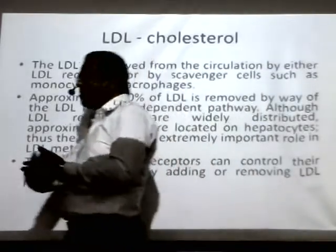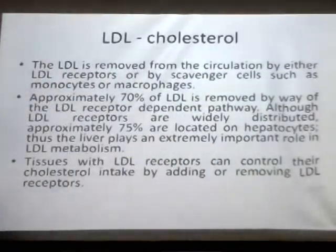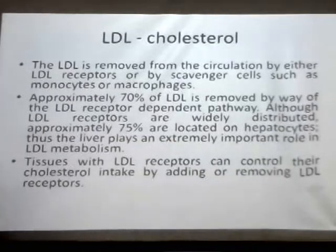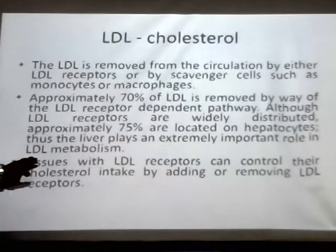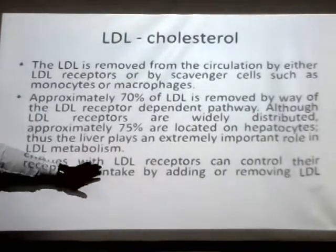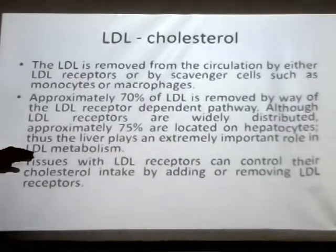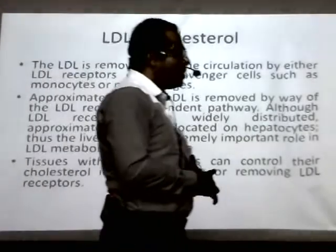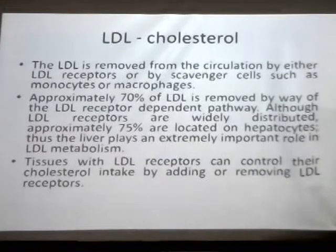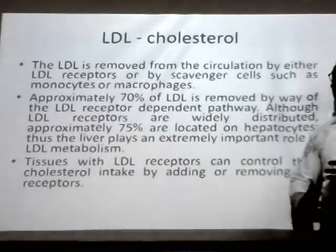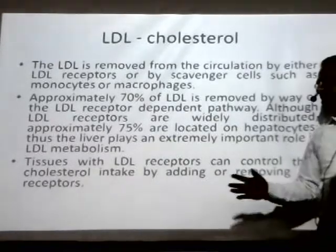Usually LDL is removed from the circulation by either LDL receptors or scavenger cells such as monocytes or macrophages. If there is an excessive amount of LDL in the blood circulation, they would be removed either by macrophages or monocytes. Approximately 70% of LDL is removed by the LDL receptor-dependent pathway. Although LDL receptors are widely distributed throughout the body, 75% of them are located in hepatocytes — that is, your liver — making the liver extremely important in LDL metabolism. Tissues with LDL receptors can control their cholesterol intake by adding or removing LDL receptors accordingly.